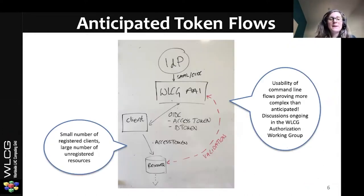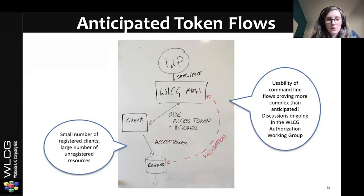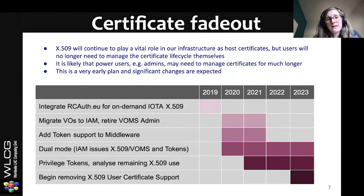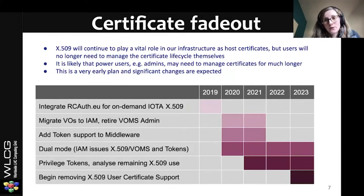In terms of the token flow, we're anticipating a small number of registered clients and a large number of unregistered resources. The clients will be responsible for receiving access tokens and refresh tokens, transforming access tokens if required, and forwarding them to resources, which will perform offline validation to avoid overloading the system. One area we've been examining recently is command line flows, where usability is proving to be more of a challenge than anticipated. If anyone is working on similar topics, please don't hesitate to get in touch.